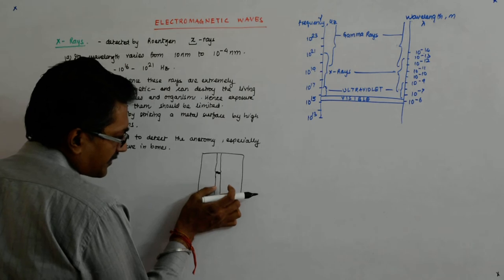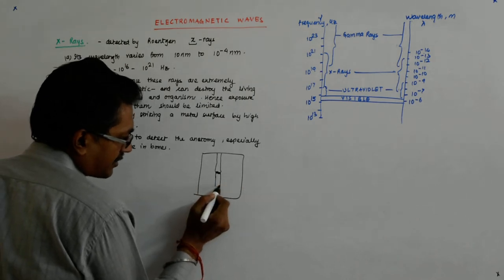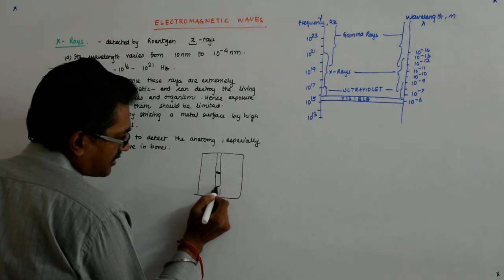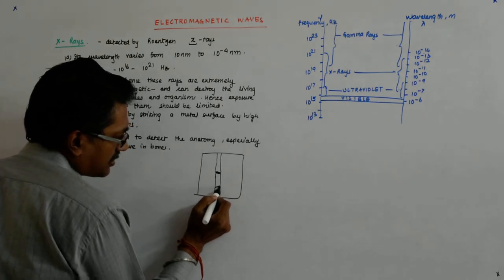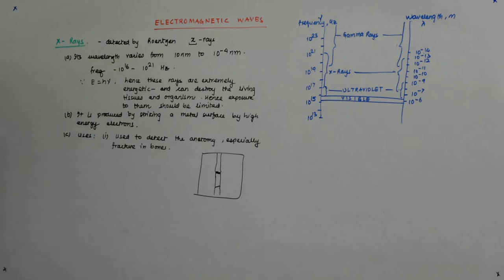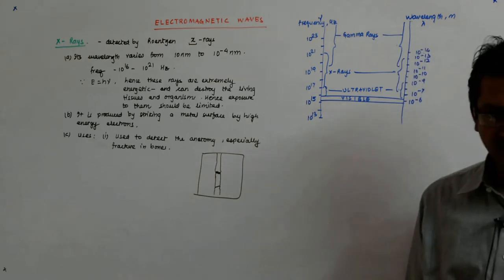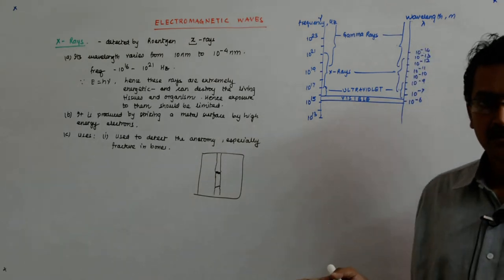So, now suppose someone has a fracture here, a fracture here. So, what happens? This blackish thing will be seen. Now that tells you that it's a fracture. It has broken. Yes, it's broken all the way.